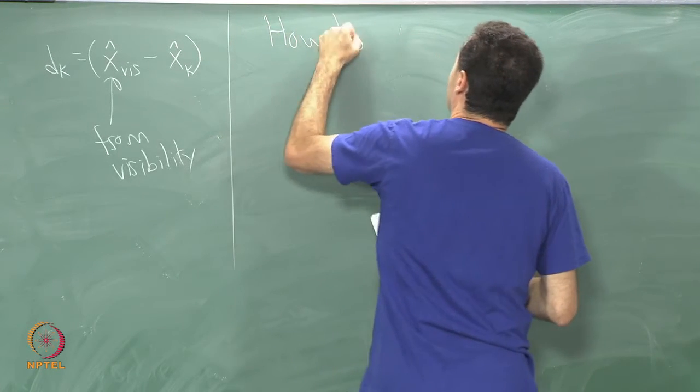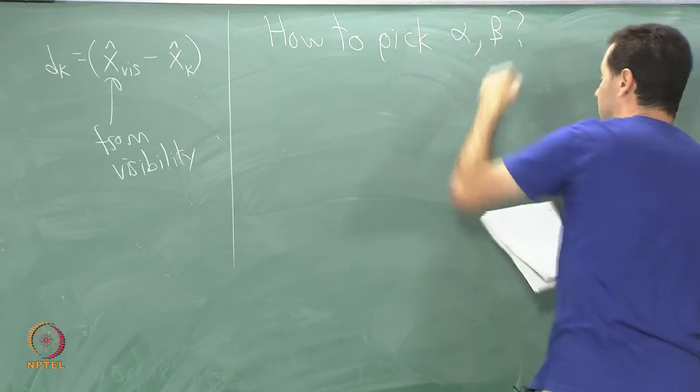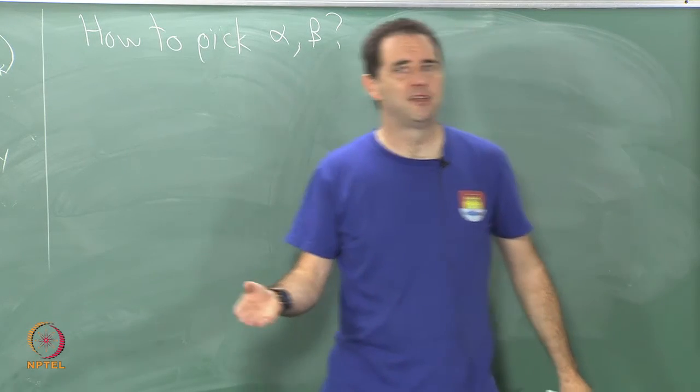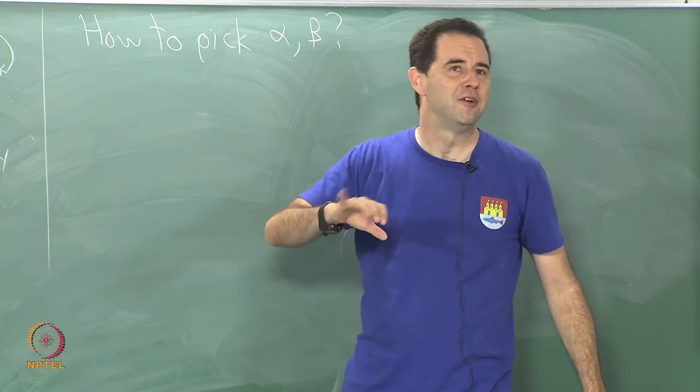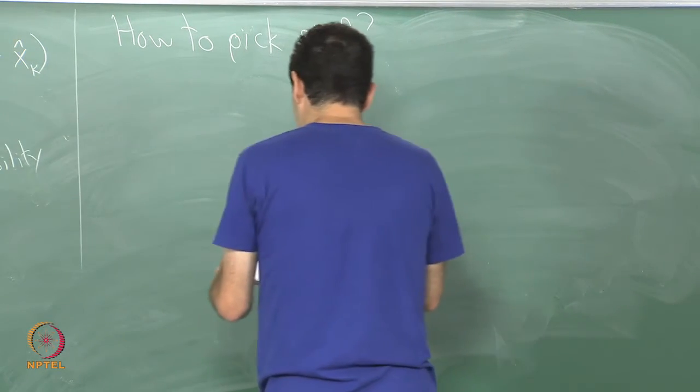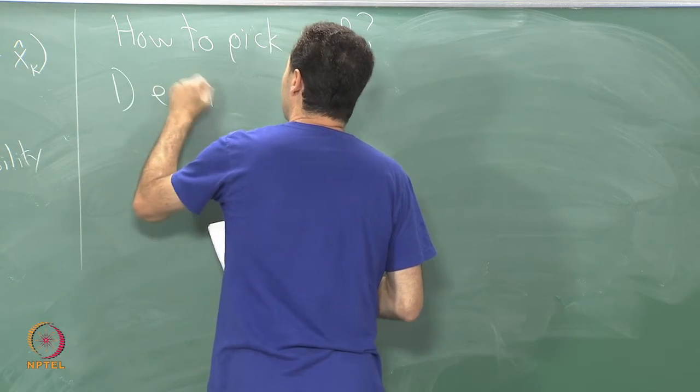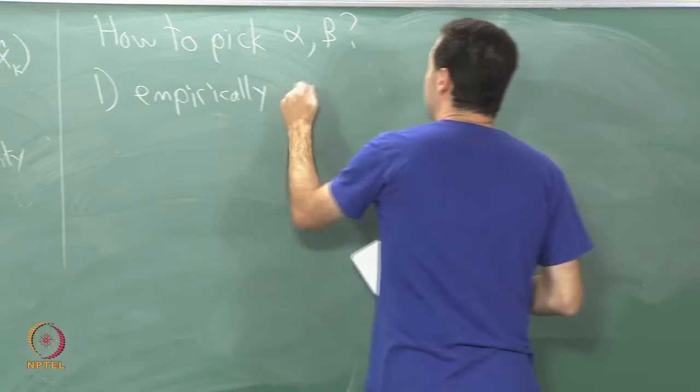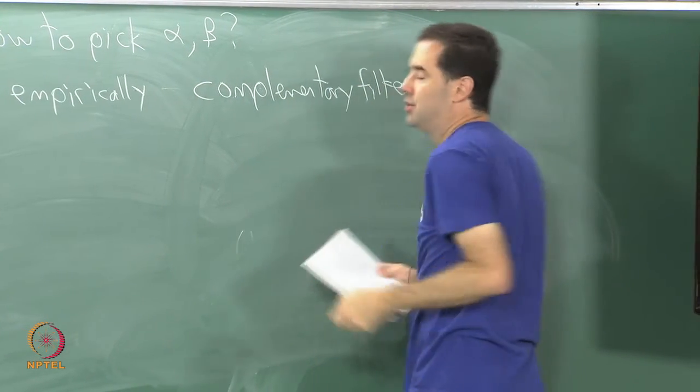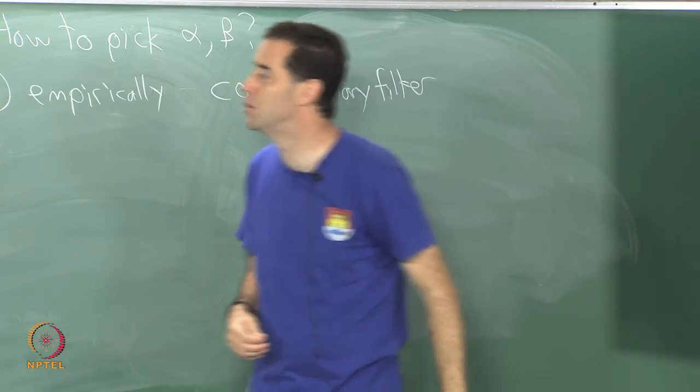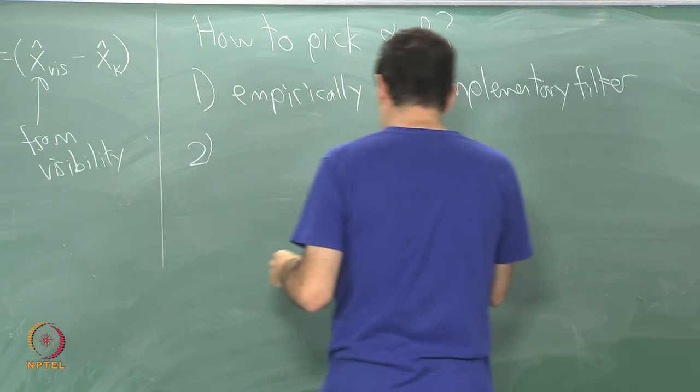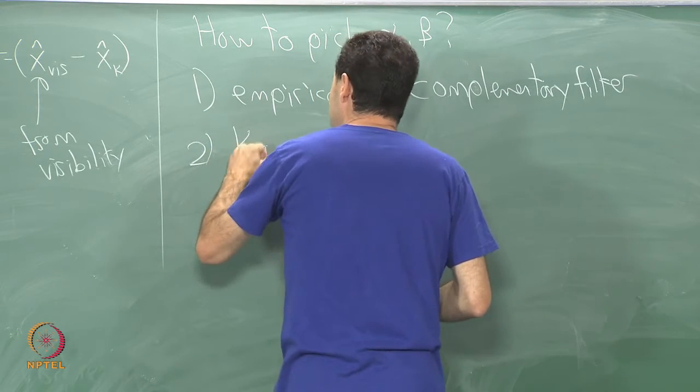How to pick alpha and beta? Again we have the same kinds of issues that we need to pick them large enough so that they fully compensate for the drift error. You need to make sure that they are not so large that they lead to instability in the tracking which causes some additional simulator sickness. If you choose them fully empirically just by trial and error, this will very much fall under what is called a complementary filter, but it is second order or two stage complementary filter. It is not like a usual complementary filter because there are two different coefficients here for each axis.